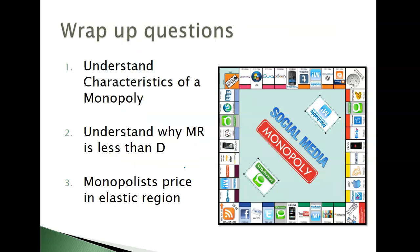Some wrap-up questions: you should understand the general characteristics of a monopoly, why marginal revenue is less than the demand curve except at the first unit, and why monopolists price in the elastic region. All right, until next time, bye!